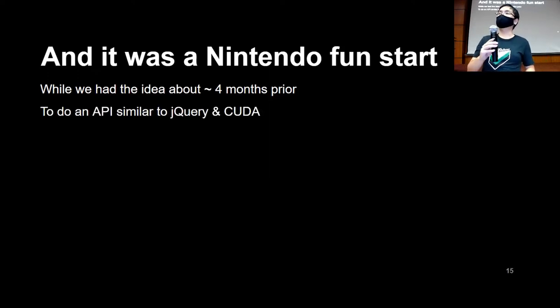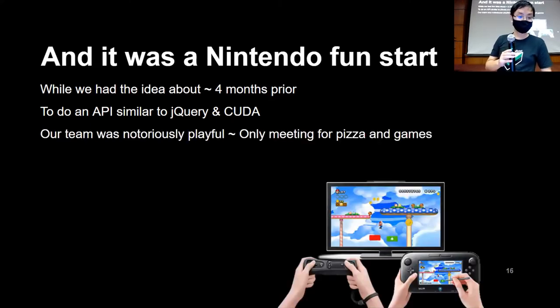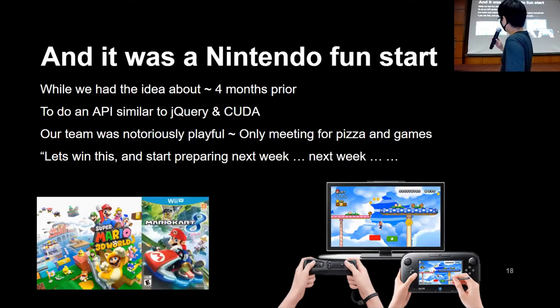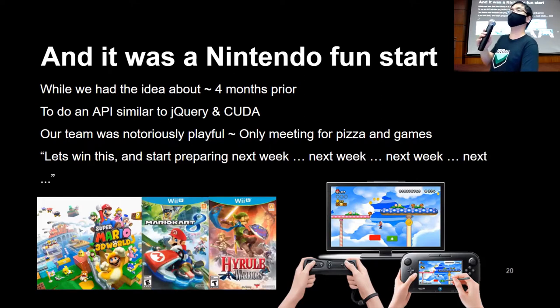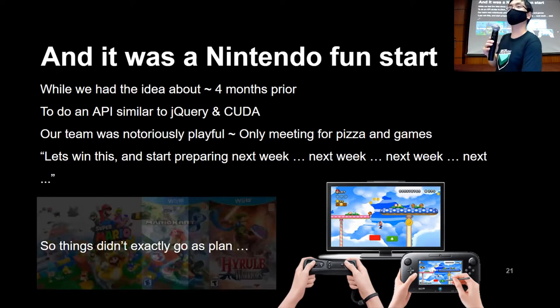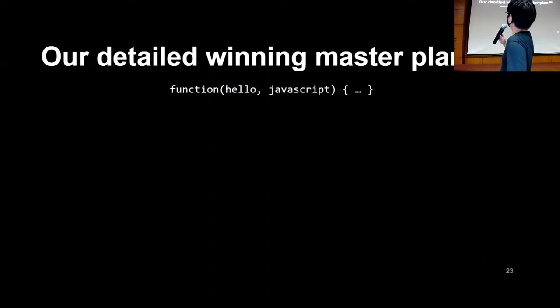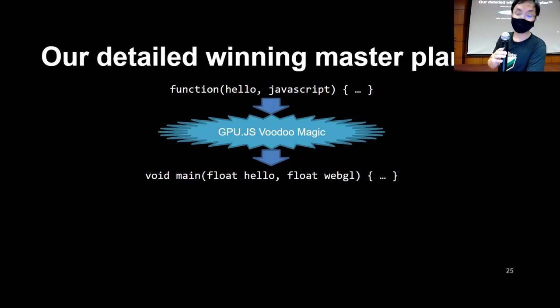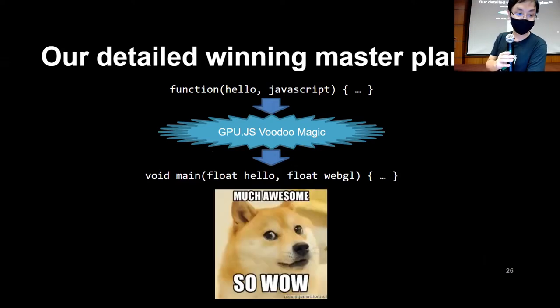The idea was an API similar to jQuery - make it as simple as possible and make it work. That didn't go well because we just kept deferring our plans on how to do it. One week after another with Super Mario, then Mario Kart 8, then we just basically kept playing the Wii U. So things didn't go exactly as planned. The detailed winning master plan for the hackathon was basically: somehow we input a JavaScript function, through voodoo magic - at this time voodoo magic was not defined - we output WebGL code, GPU code effectively, and somehow everything works. This was literally as detailed as the plan was.